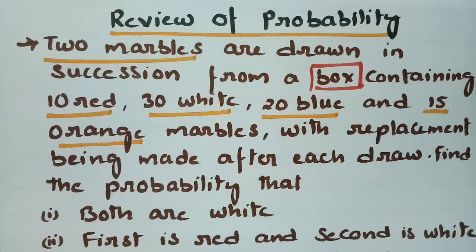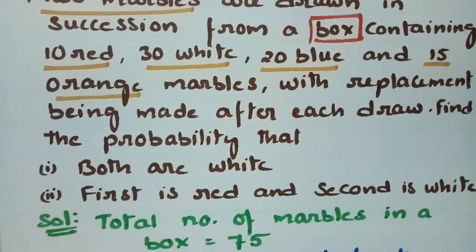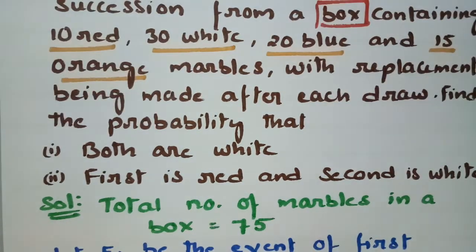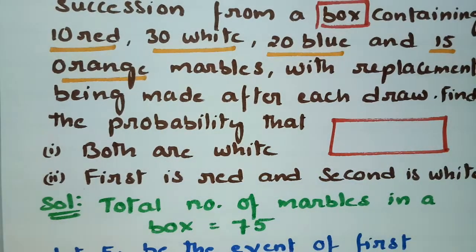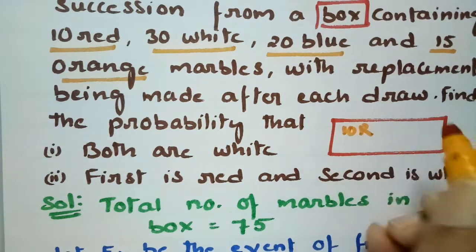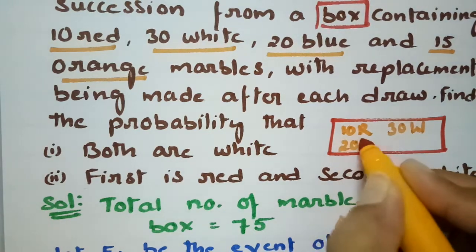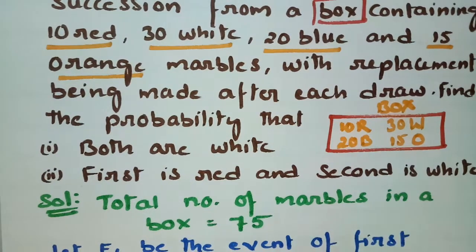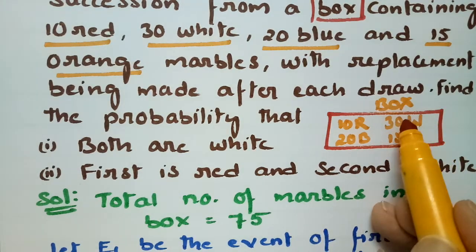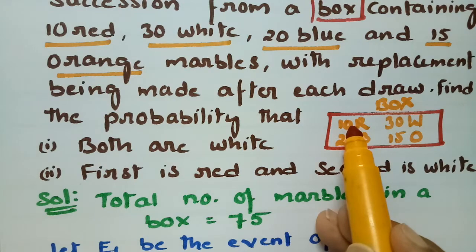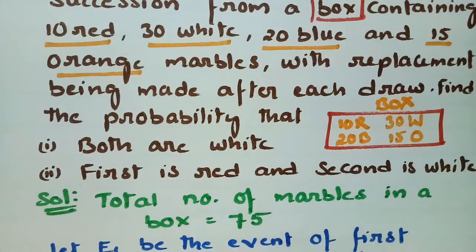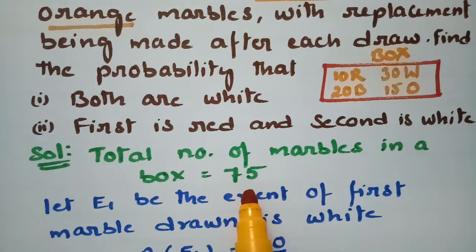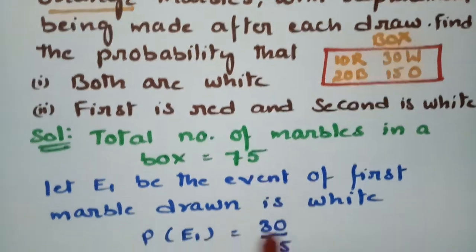We need to find the probability that both marbles are white, and also that the first is red and the second is white. The box contains 10 red, 30 white, 20 blue, and 15 orange marbles. The total number of marbles is 10 + 30 + 20 + 15, which equals 75 marbles.